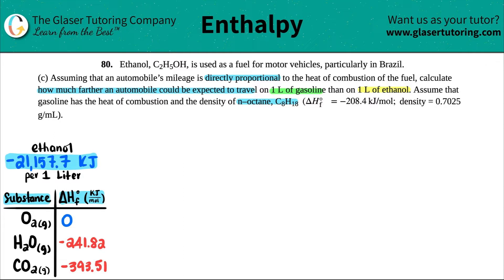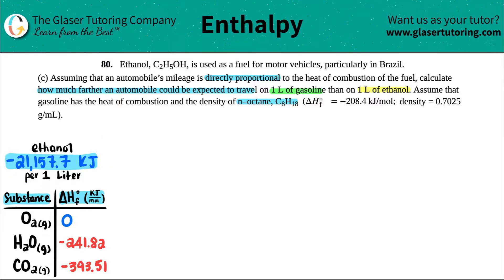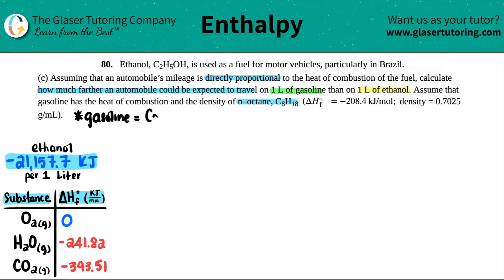We're on part C now, building on work from the last two videos. The key result we already found in part B is that burning one liter of ethanol releases 21,157.7 kilojoules. Now we're comparing that to the heat produced by one liter of gasoline, which is C8H18 — gasoline and C8H18 are interchangeable for this problem.